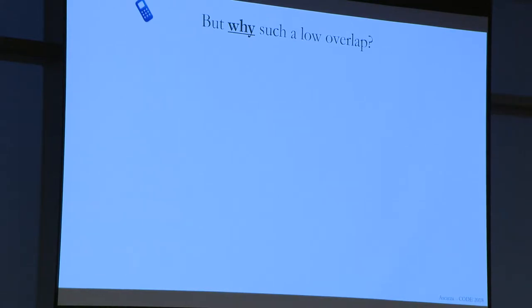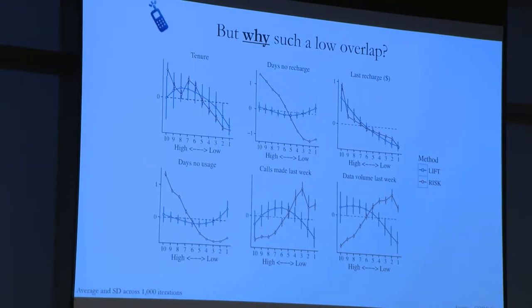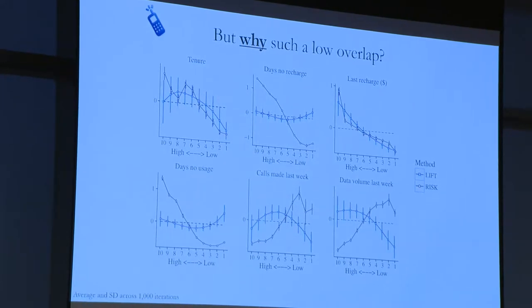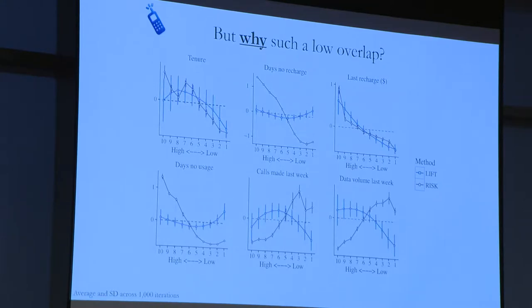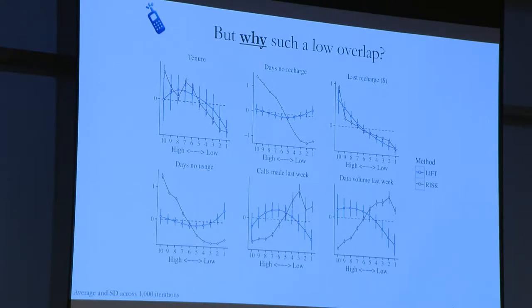The second thing we did was look at whether any characteristics of consumers can help me understand why these groups are so different. I'm going to dig back into the covariates I observe. I cannot make generalizable points because this was one example — I'm working on having something bigger. For each customer characteristic, for example 'no recharge' — meaning the moment of intervention, when was the last time you put extra money in your account — this is a very good predictor for risk. High-risk people had not recharged for a long time.